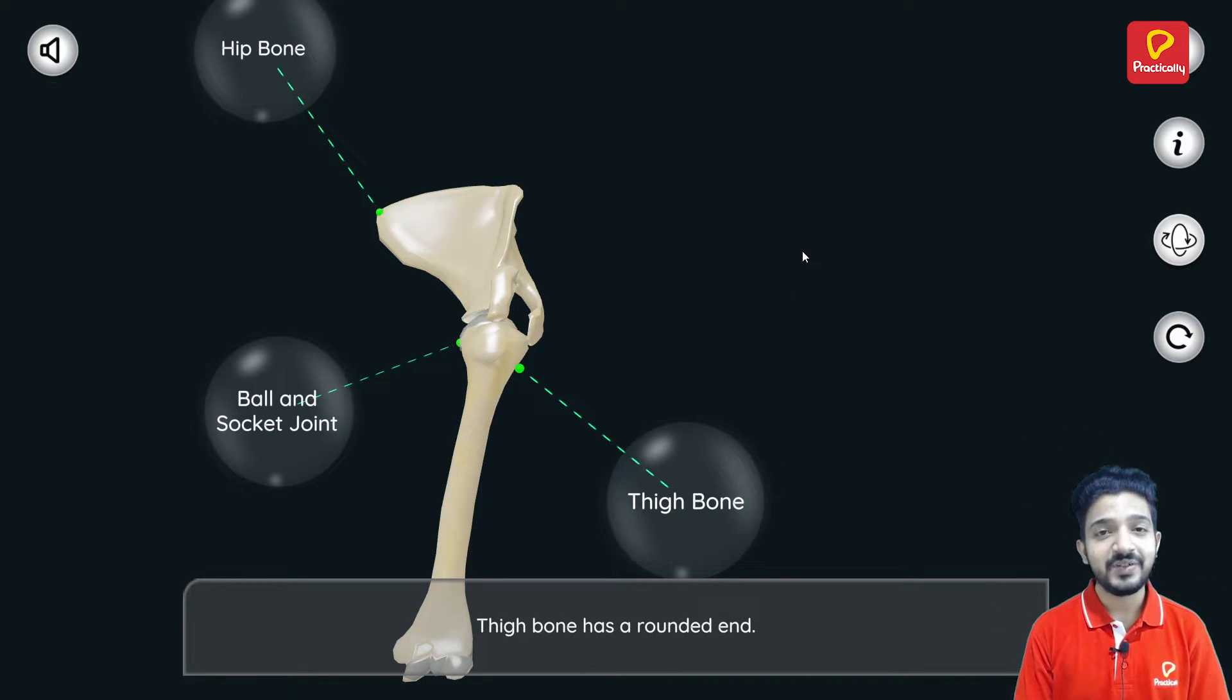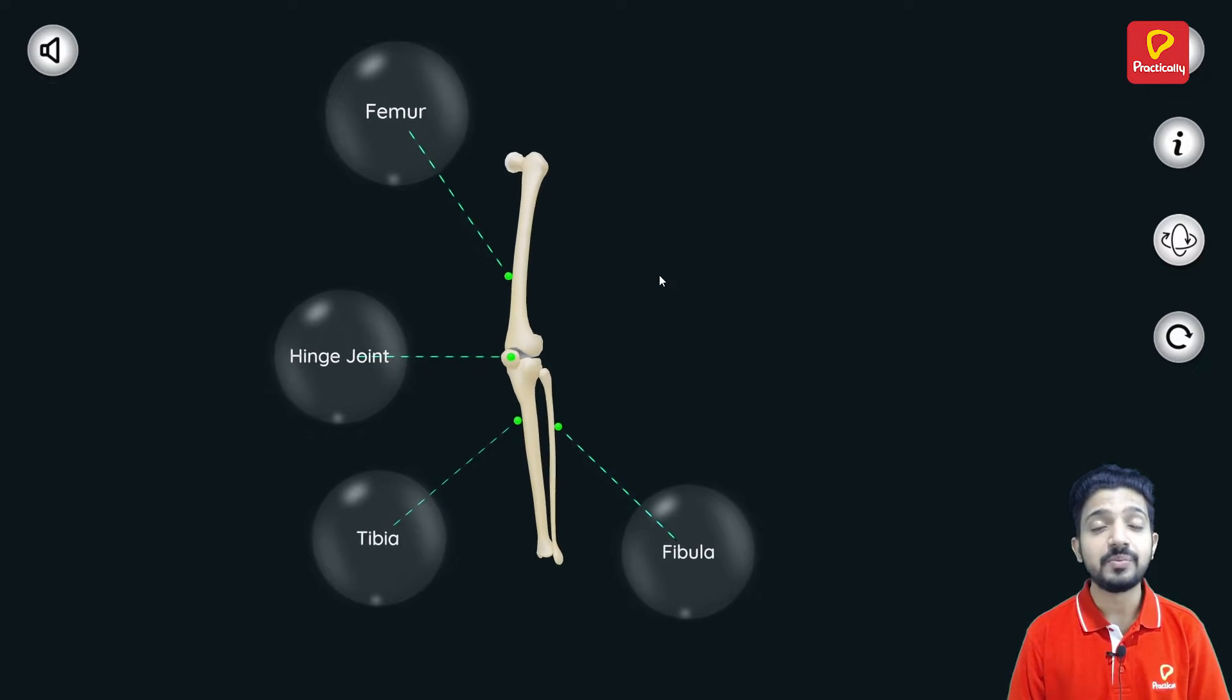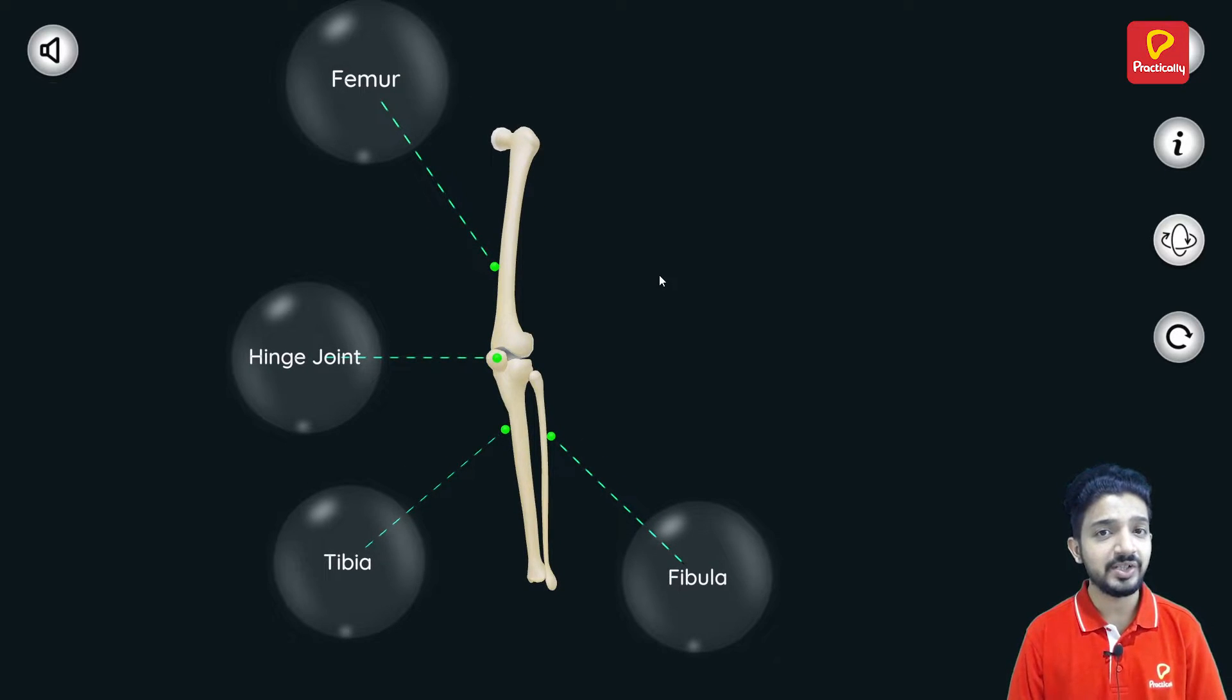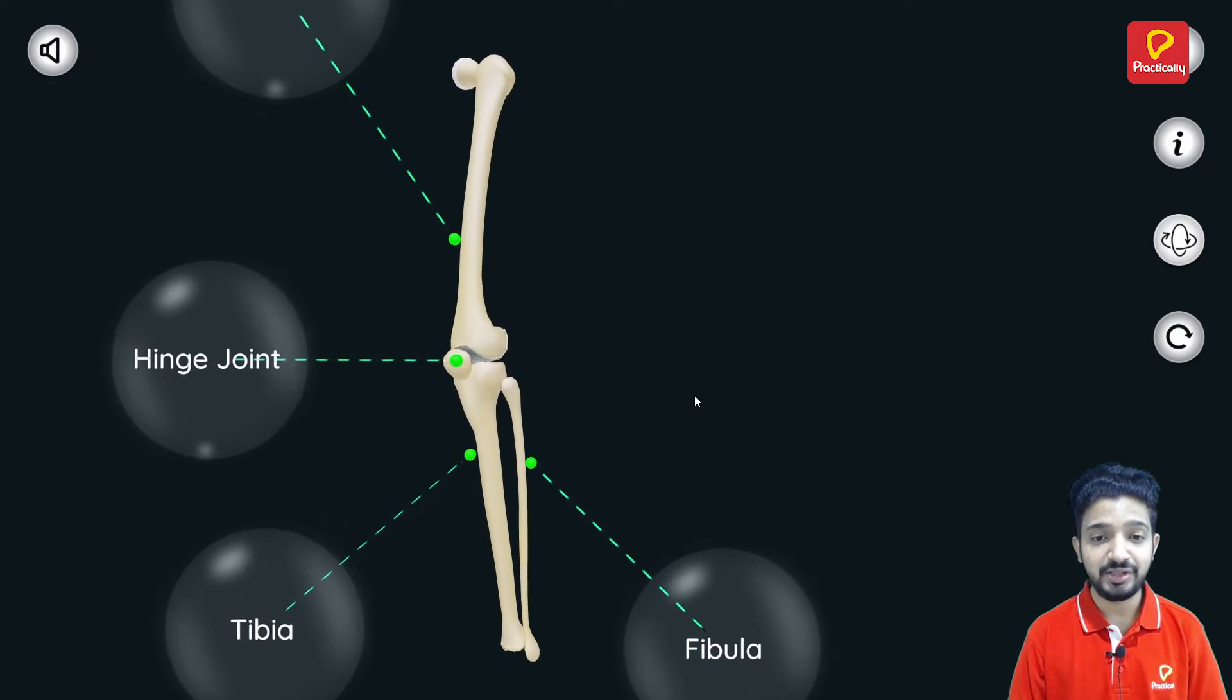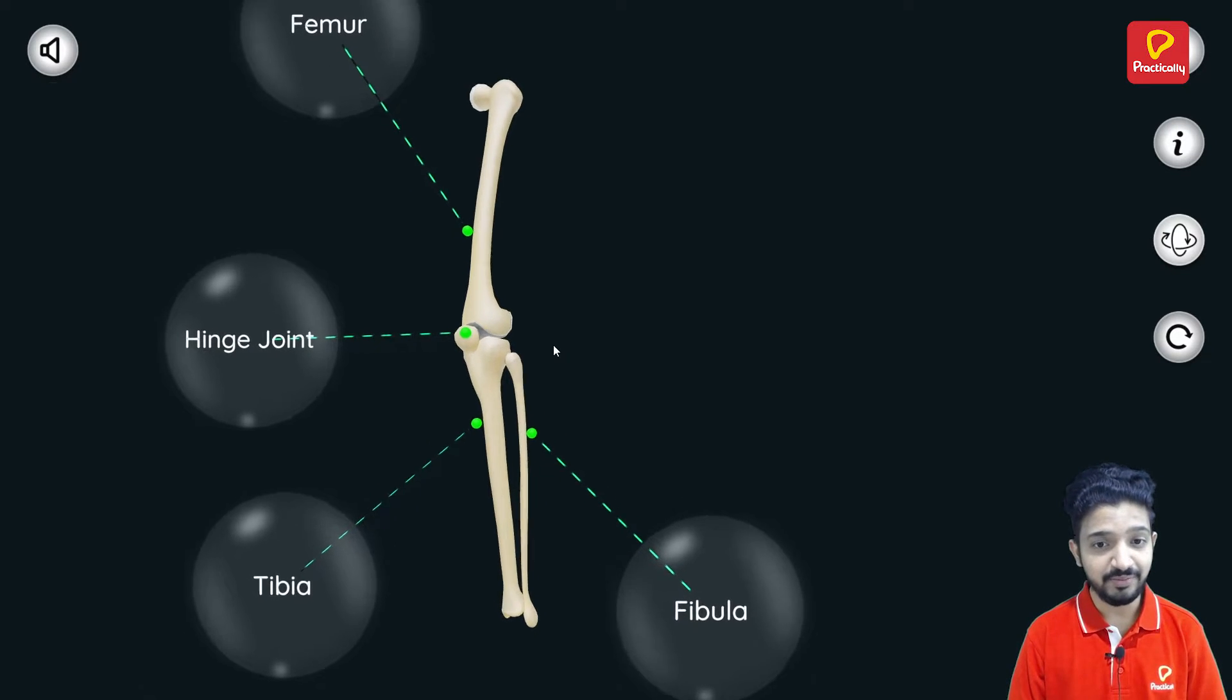So this was the ball and socket joint. The third type of joint is the hinge joint. In this type of joint, the motion is allowed only in one direction, that is back and forth. Here you can see example of hinge joint which is between the leg bone, that is tibia and fibula, and the thigh bone, that is femur.